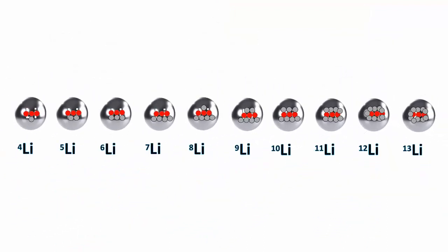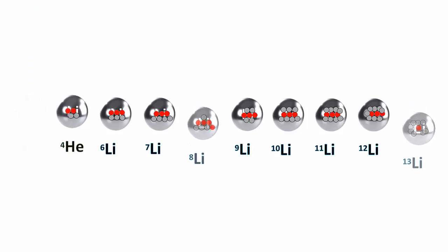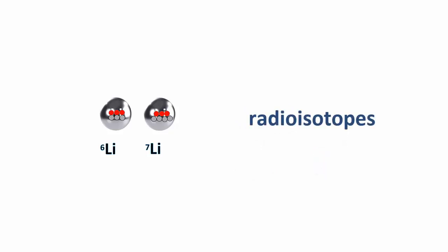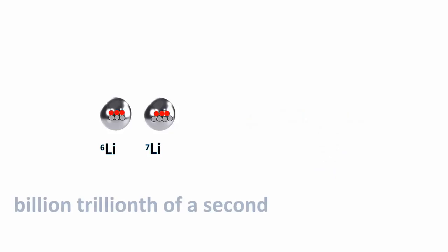But most of lithium's isotopes fall apart quickly. Throwing out subatomic particles and radiation. And then they change into another isotope. Or maybe even a different kind of atom. Scientists call these unstable ones radioactive isotopes or radioisotopes. Some only last for a billion trillionth of a second. The time taken for radioisotopes to disintegrate is measured by their half-lives. And we'll explain that in another video.